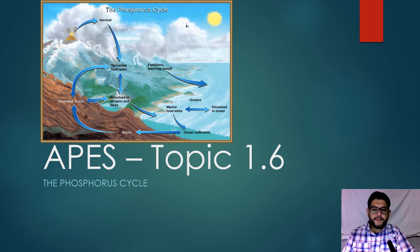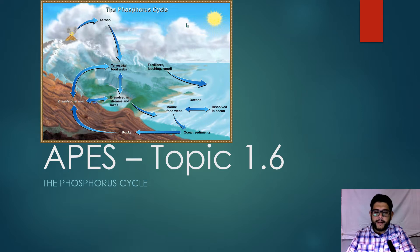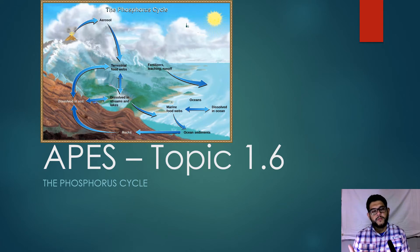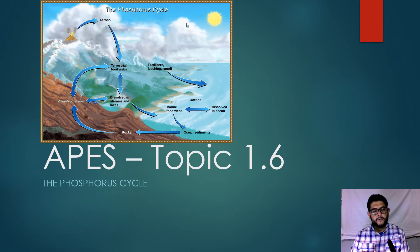Hi guys, this is Mr. V and this is video number 1.6 APES review. The topic is the phosphorous cycle. This is one of the easier ones to remember, and it's more important because it has a big human component and it's also lacking something that the other cycles are not.